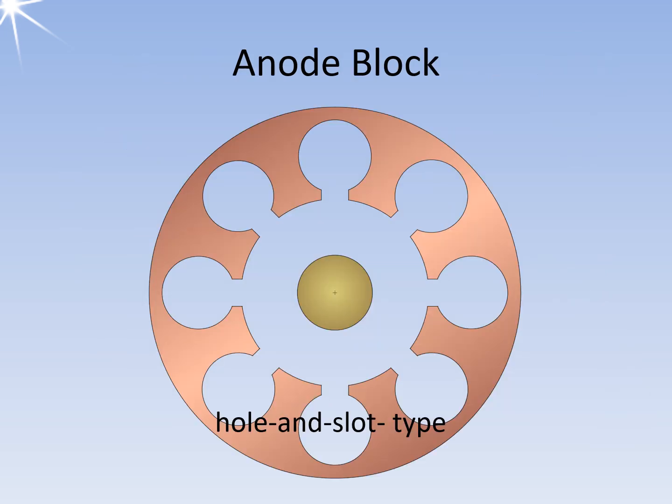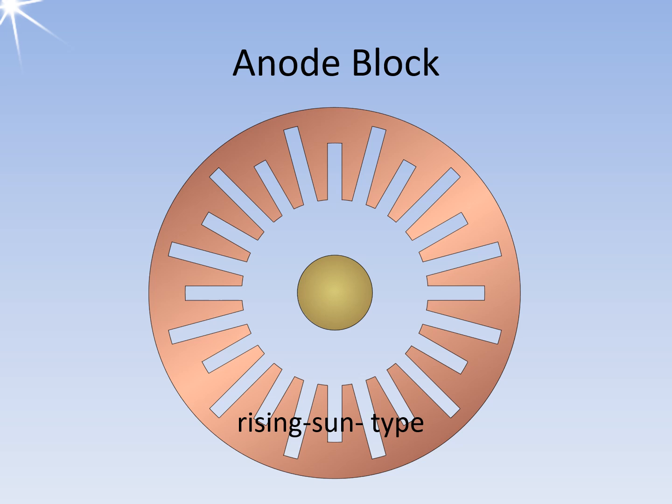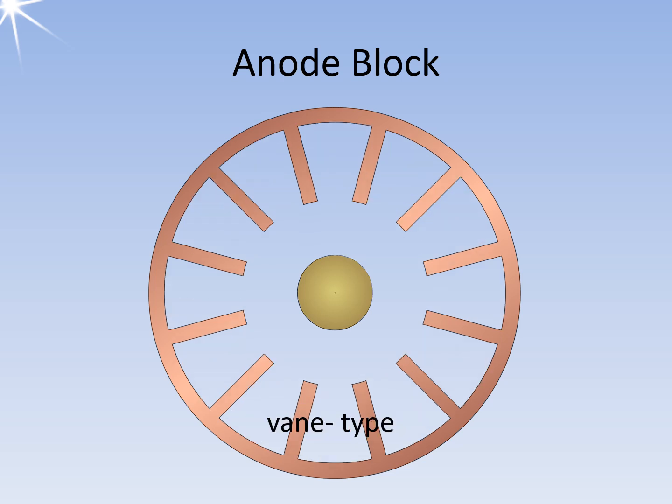The anode block can be designed differently. The classic form is the hole and slot type. Another form is the slot type. A variation of the slot type is the rising sun type. The different lengths of the slots are intended to prevent oscillation on harmonics. The vanes type is the easiest to manufacture, as the vanes are inserted into prepared slots in the round material. The resonance frequency of the resonators can be checked during manufacturing and corrected if necessary.